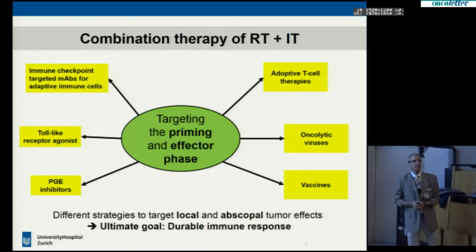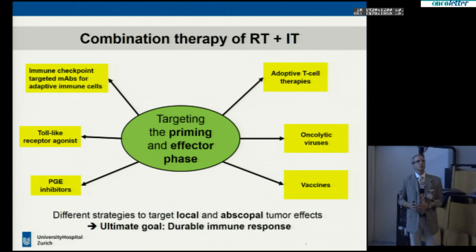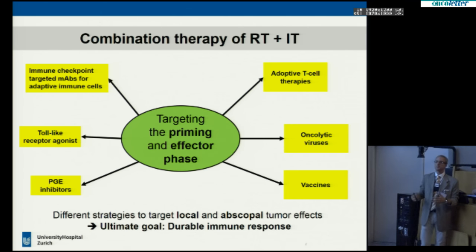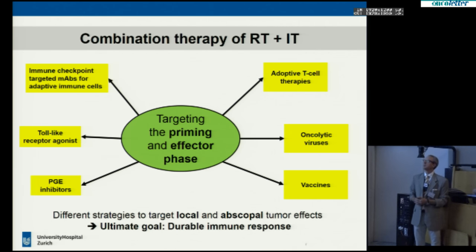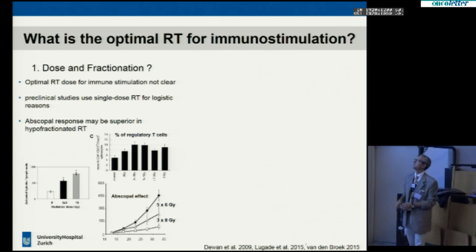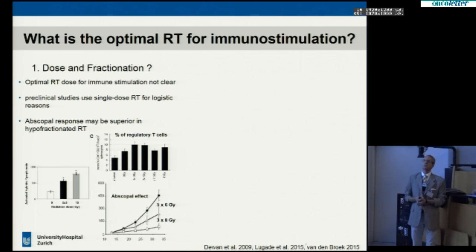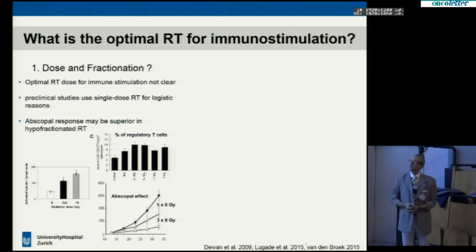It's not always about checkpoint inhibition or monoclonal antibodies combined with radiotherapy. There have been different approaches with different targets or technologies used pre-clinically, all either targeting the primary or effector phase and looking at local or abscopal effects, but the ultimate goal should be a durable immune response. Now, if we know radiotherapy may have this effect, what about dose and fractionation? What's the optimal timing, dose, and fractionation — how should radiotherapy be given?